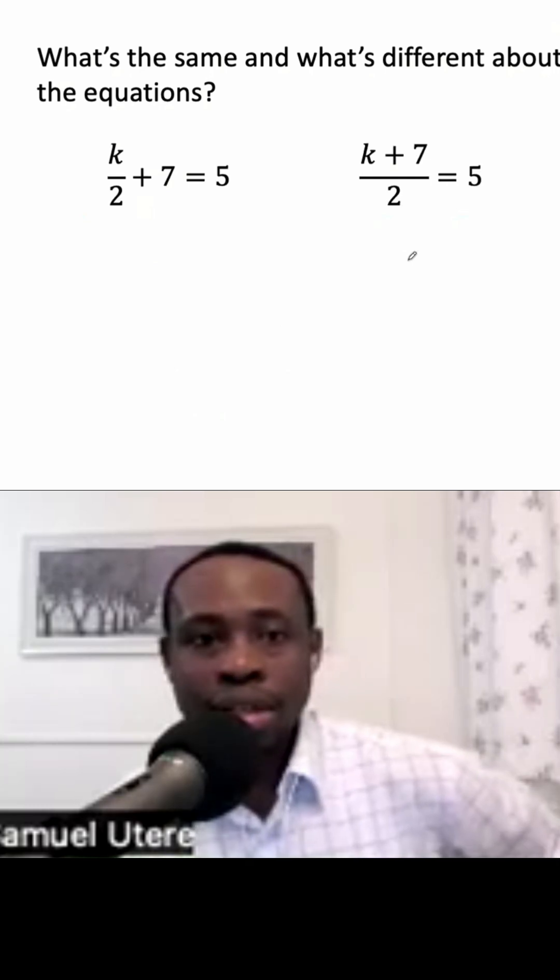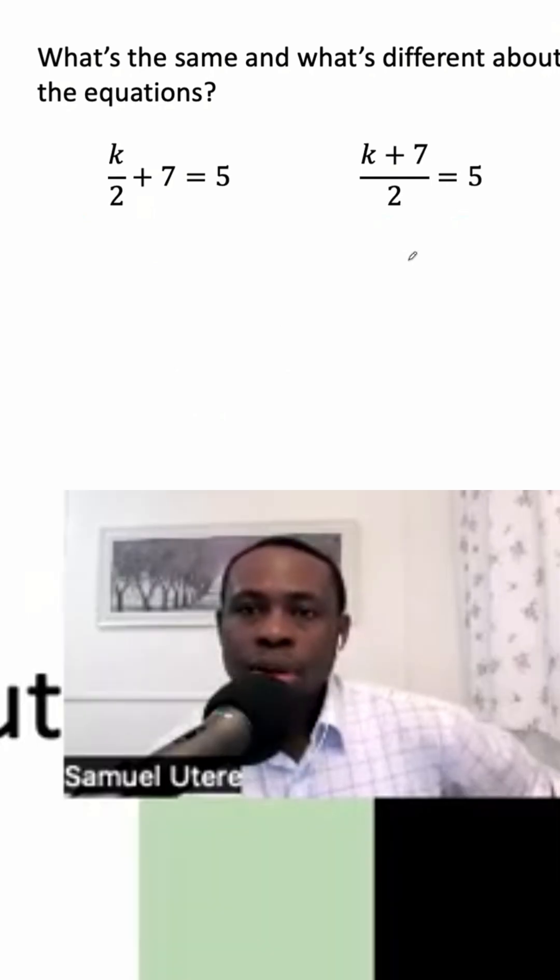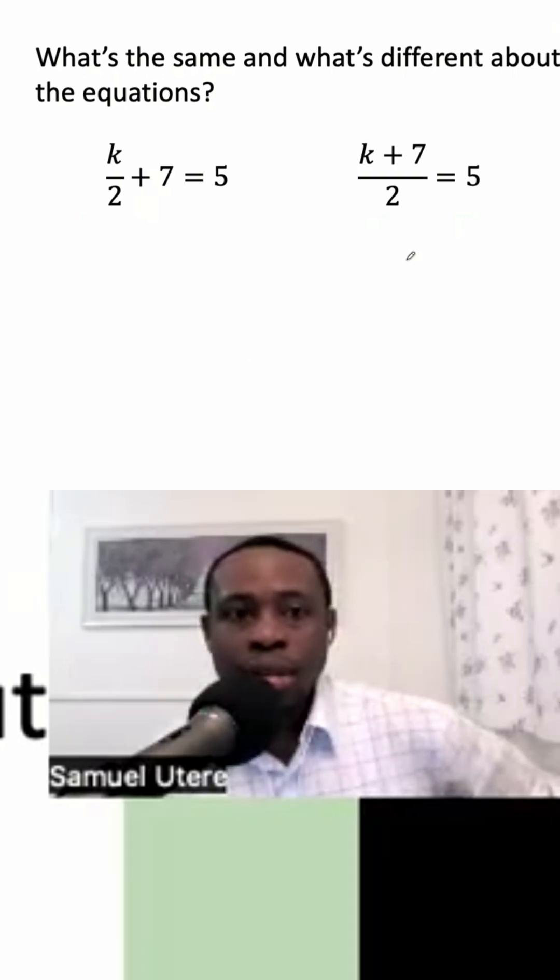Here is another interesting, challenging equation. Have you noticed what is preventing us from having K just being on its own? The first thing you notice is the add seven.